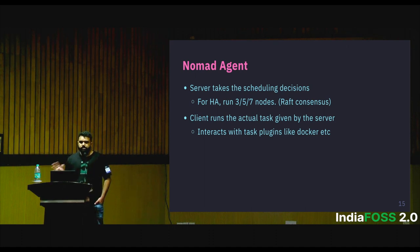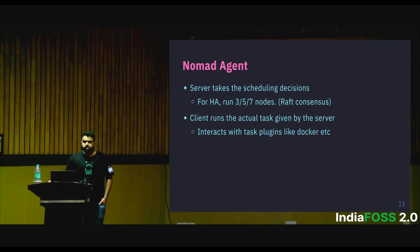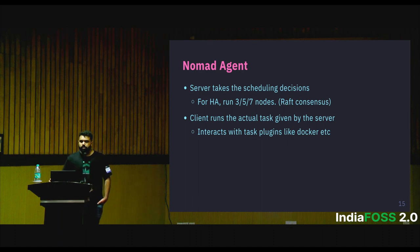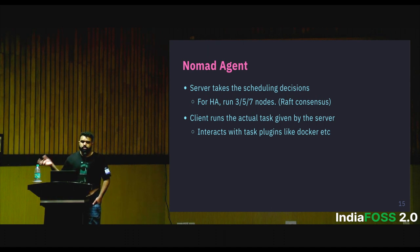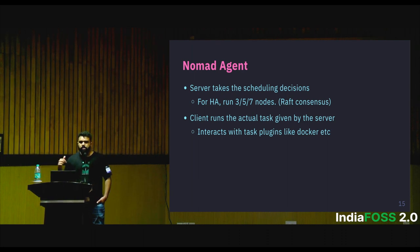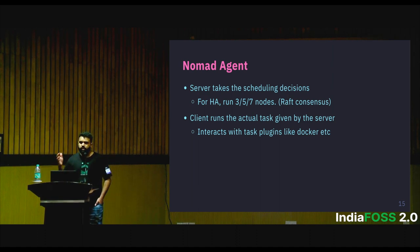Nomad comes in two modes as a Nomad agent. You can run it as a server or as a client. The Nomad server won't deploy your applications directly where the server is running — it deploys to the client. The client talks to the task drivers. If you're using a Docker container, it talks to the Docker daemon on that host. Nomad translates the job spec to the Docker driver and executes your container. So the server decides which client is free, and the client executes the workload — it's as simple as that.